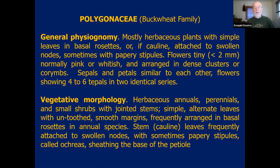Flowers in the whole family are normally very tiny, less than two millimeters, pink or whitish, and arranged in dense clusters — or cymes, as we learned when we talked about inflorescences. Sepals and petals are similar to each other. When petals and sepals are not different, we call them tepals because they're sometimes very difficult to tell apart. The flowers in some species show four tepals, corresponding to a standard typical dicot, but many have six tepals — three sepals and three petals in two identical series.